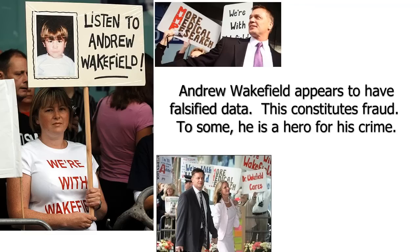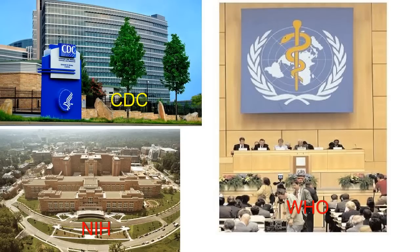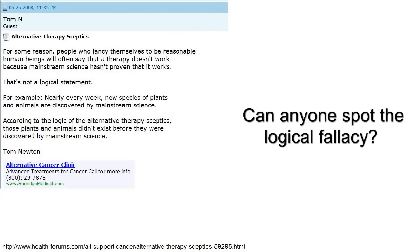Many still cite a few studies that have largely been discredited, such as the Wakefield paper, where the investigator was found to be in the pay of trial lawyers currently engaged in anti-vaccine lawsuits, as fair and unbiased. And the dozens of other studies on very large populations done by international agencies such as the CDC, NIH, and WHO are discounted as biased.